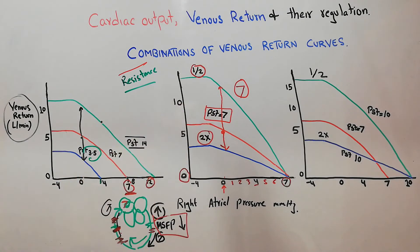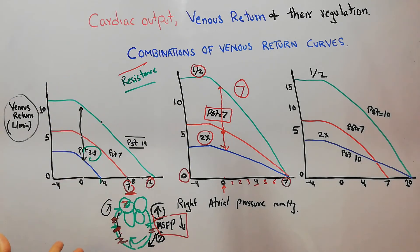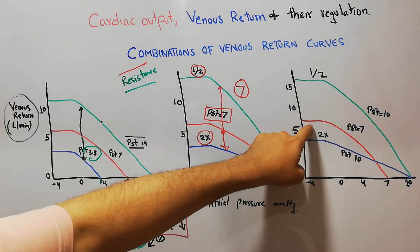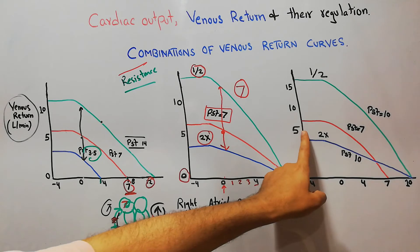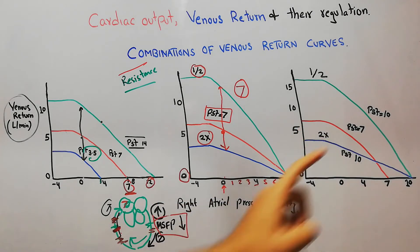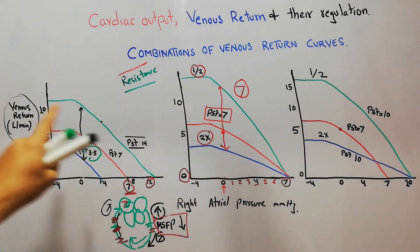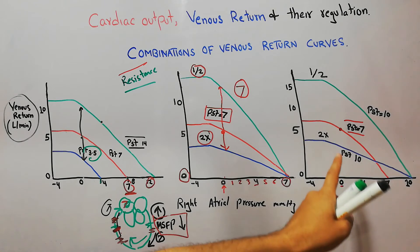Now we are going to combine these two graphs and see what happens if resistance to venous return is increased or decreased while simultaneously the mean systemic filling pressure is also increased or decreased. At normal right atrial pressure and normal venous return, at zero mmHg we have venous return of around five liters per minute. The mean systemic filling pressure is seven, right atrial pressure is normal, and venous return is normal.